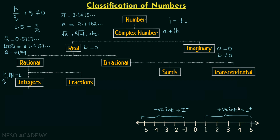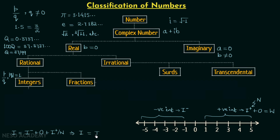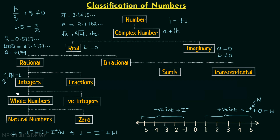Zero along with the positive integers we call whole numbers. Positive integers are also called natural numbers. So integers consist of negative integers together with whole numbers, and whole numbers consist of natural numbers (positive integers) and 0.